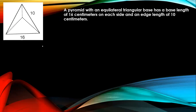To find the slant height, we need to apply the Pythagorean theorem: c squared equals a squared plus b squared. Since the base length is 16, half of the base length is 8. This is an equilateral triangle, so half of the base is 8.